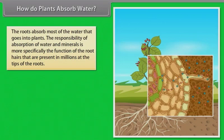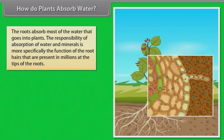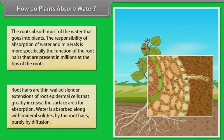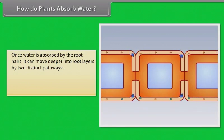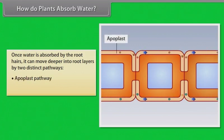How do plants absorb water? The roots absorb most of the water that goes into plants, which is why we give water to the soil and not on the leaves. The responsibility of absorption of water and minerals is more specifically the function of the root hairs, present in millions at the tips of the roots. Root hairs are thin-walled, slender extensions of root epidermal cells that greatly increase the surface area for absorption. Water is absorbed along with mineral solutes by the root hairs purely by diffusion. Once water is absorbed by the root hairs, it can move deeper into root layers by two distinct pathways: the apoplast pathway and the symplast pathway.